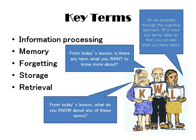Key terms for the introduction to the cognitive approach include: information processing, memory, forgetting, storage — which is how we keep memories — and retrieval, which is how we get memories out of our storage system, how we pull them forward into our consciousness.